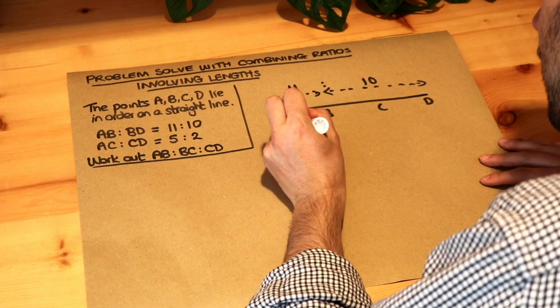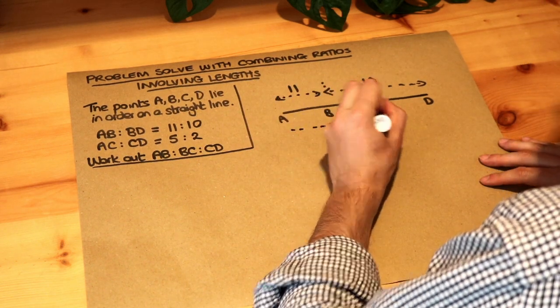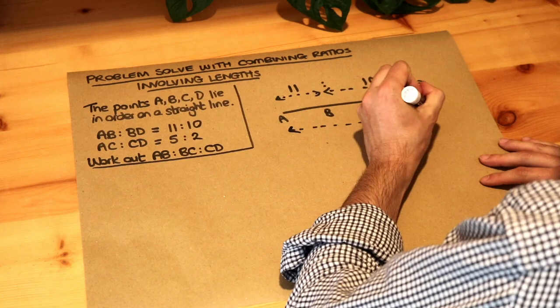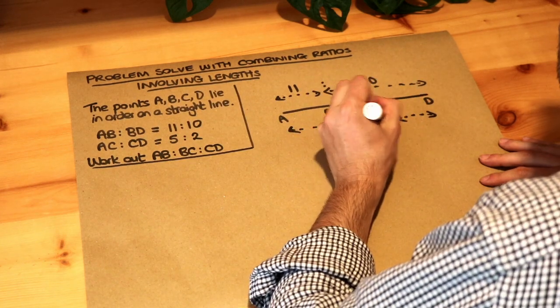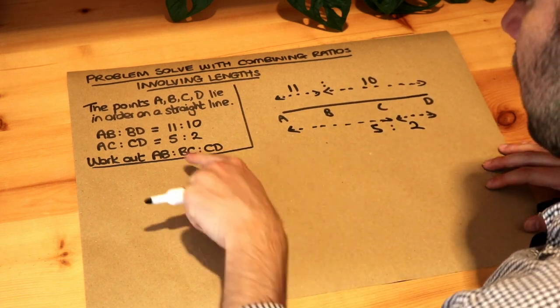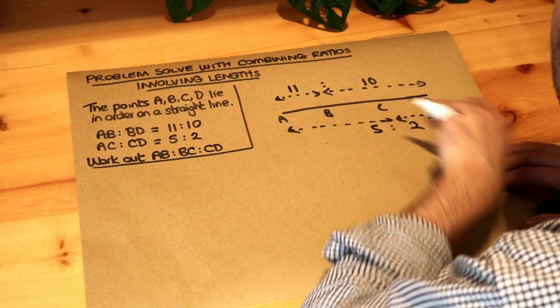And we're told the ratio of AC to CD, which is this number here, is 5 to 2. We want to work out the ratio of AB to BC to CD.